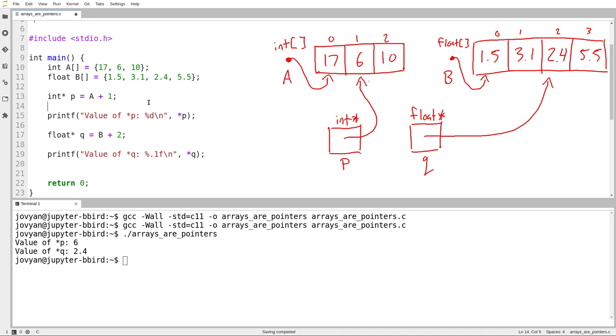So we'll go back to this representation here. The name of an array, after I create the array, the name of the array behaves exactly the same as a pointer to the first element of the array. That means it can be used in every expression where you would need a value of type int star, in the case of A, or float star, in the case of B.